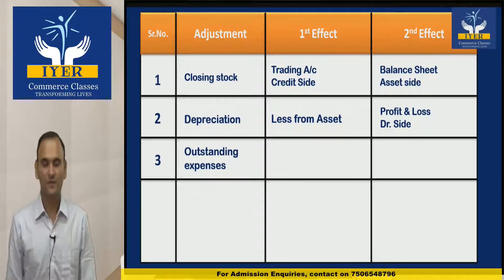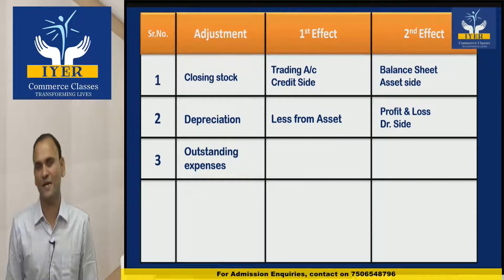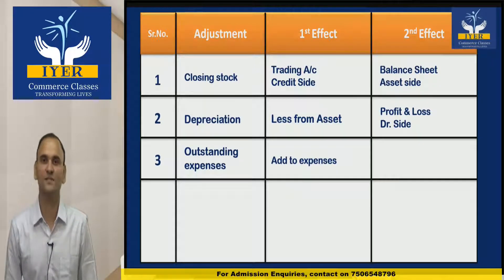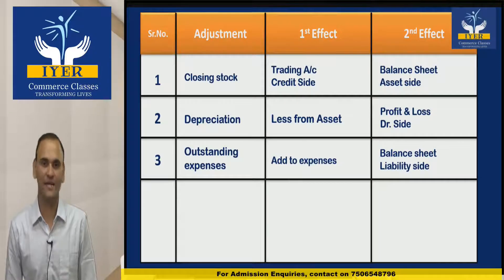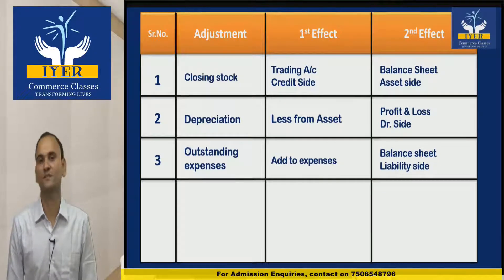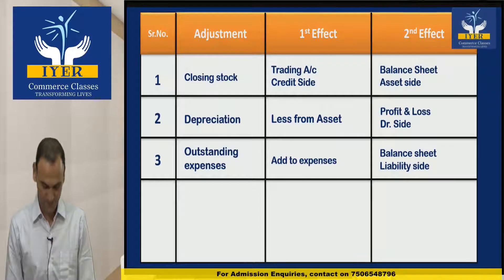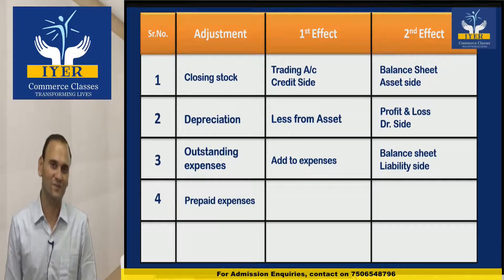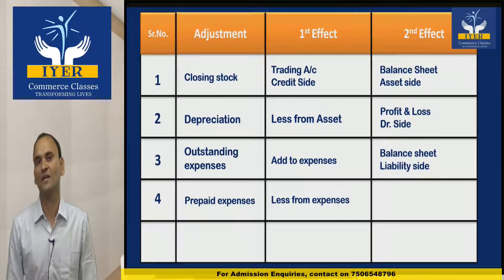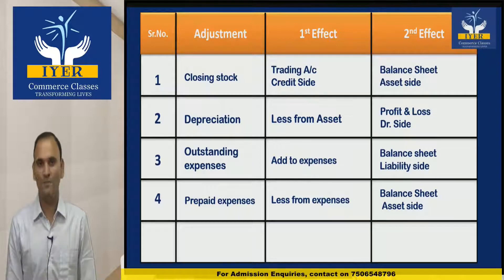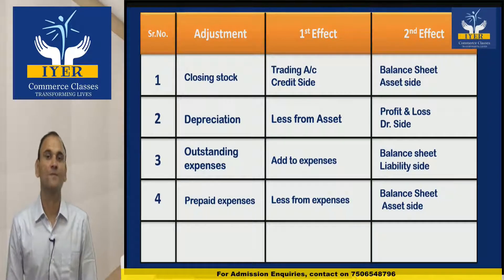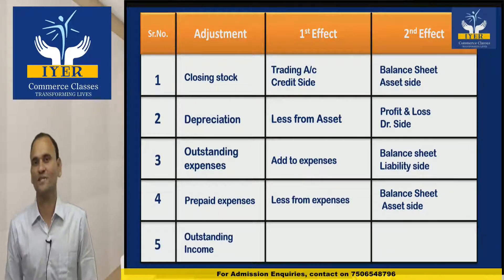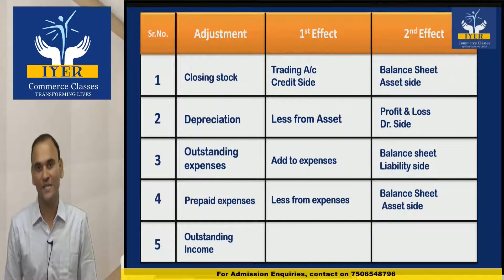The third adjustment is Outstanding Expenses, and the two effects are: add to expenses, and Balance Sheet liability side. The next one is Prepaid Expenses, and the two effects are: less from expenses, and Balance Sheet asset side.